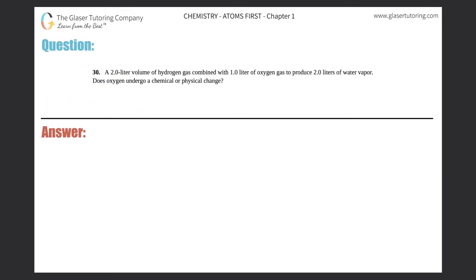Number 30: A 2 liter volume of hydrogen gas combined with 1 liter of oxygen gas to produce 2 liters of water vapor. Does oxygen undergo a chemical or physical change? I think this would best be represented by a picture, and I have lovely artistic skills here, so let's get to it.